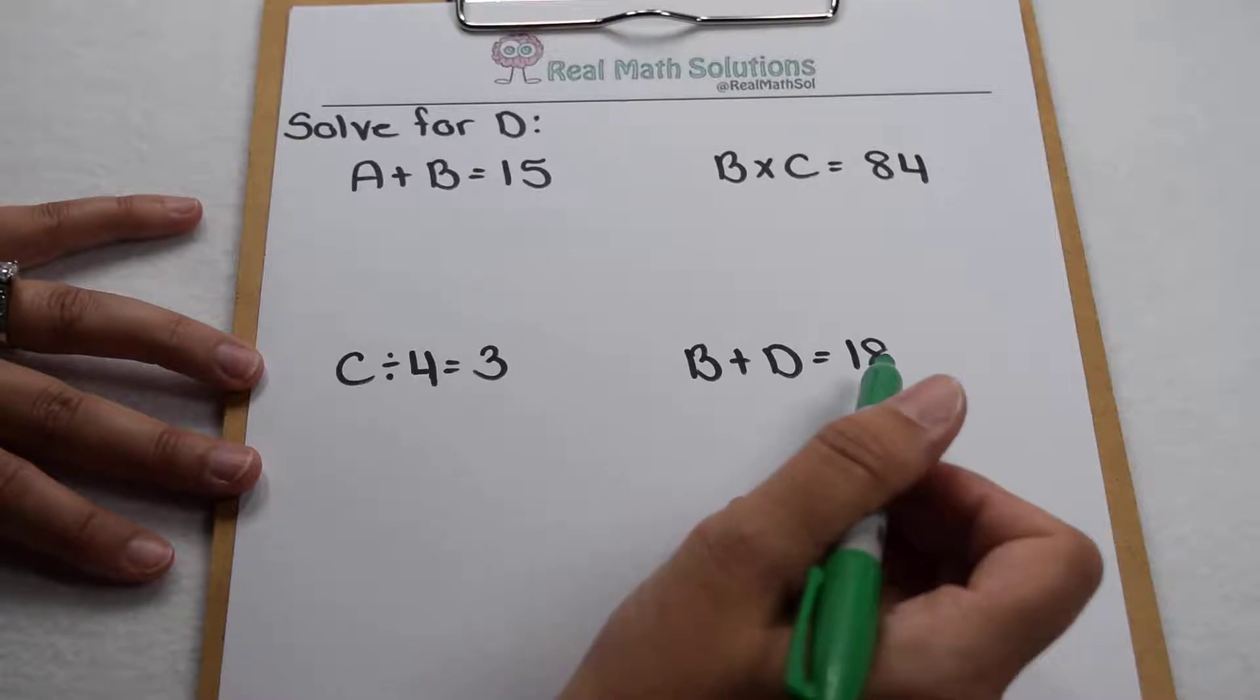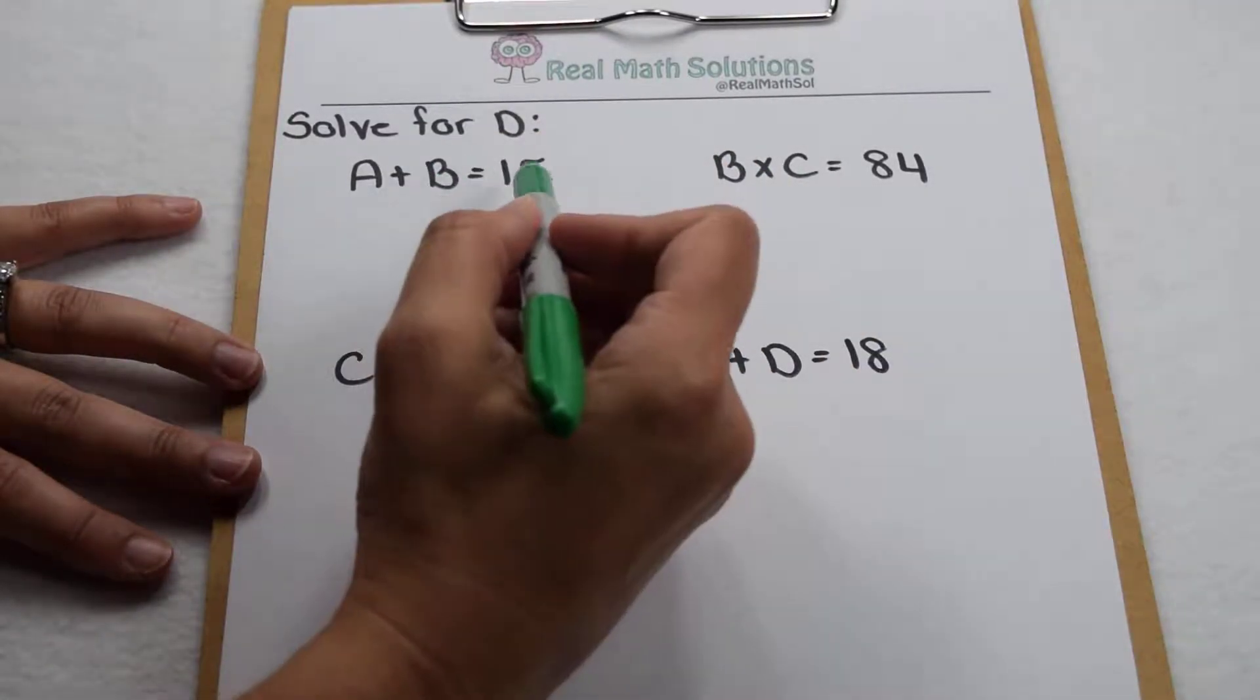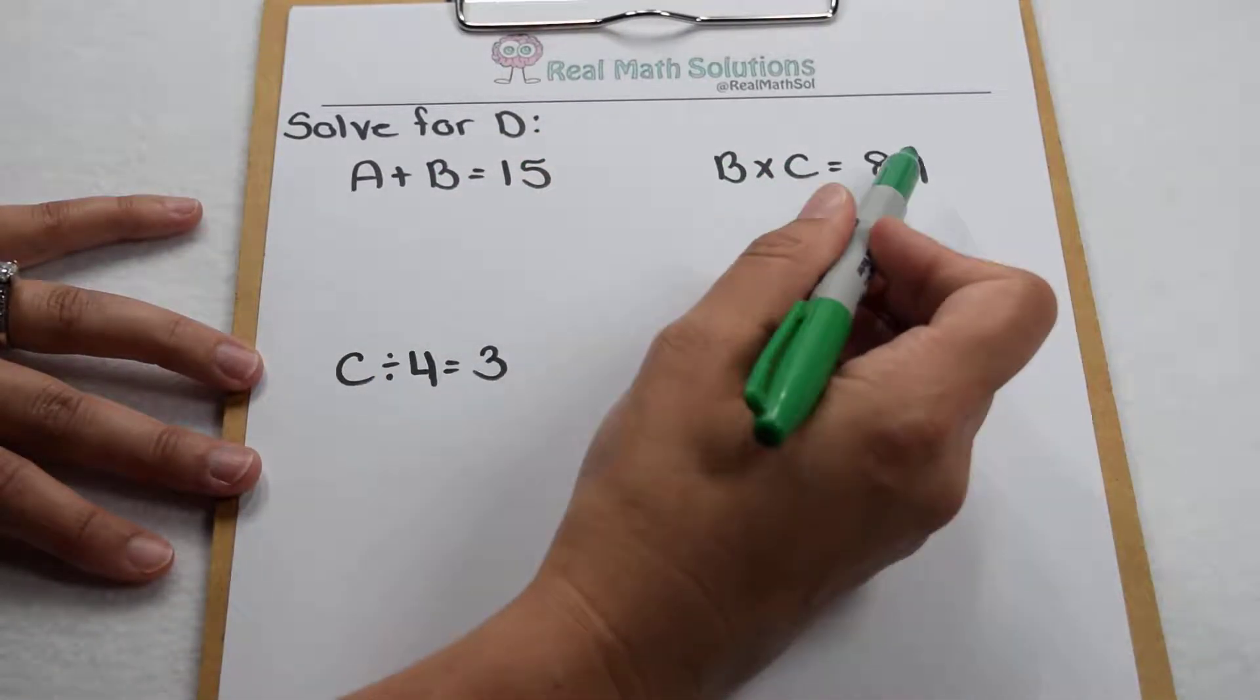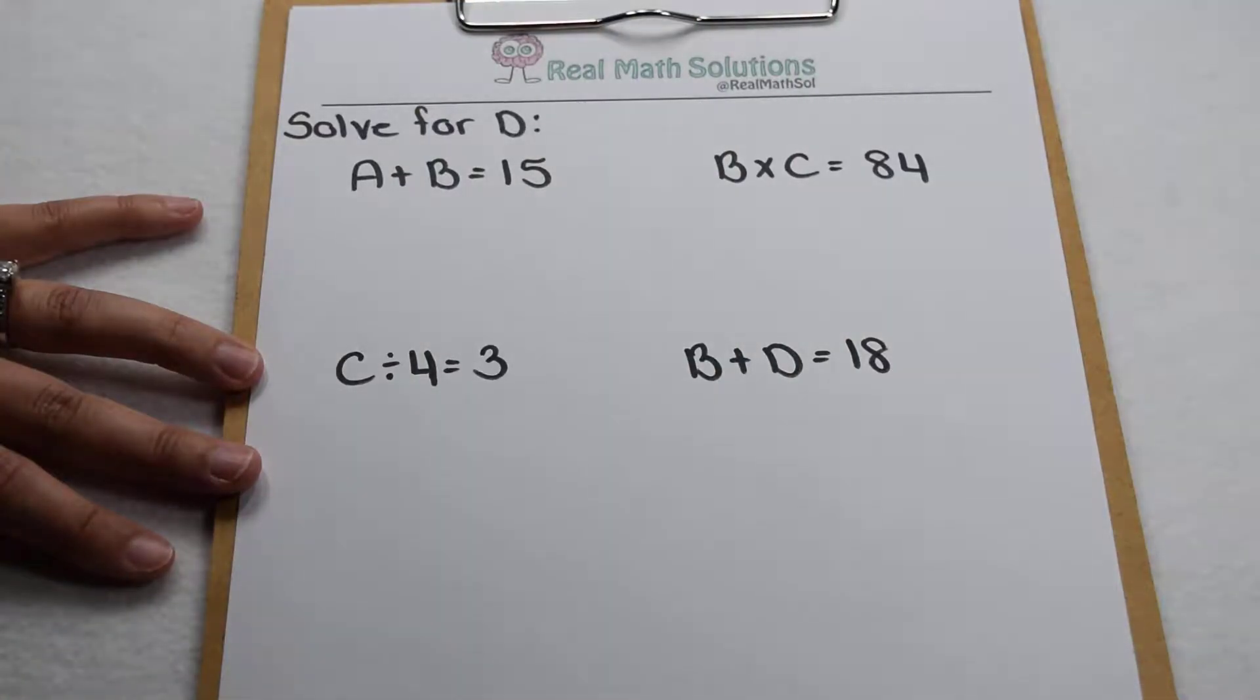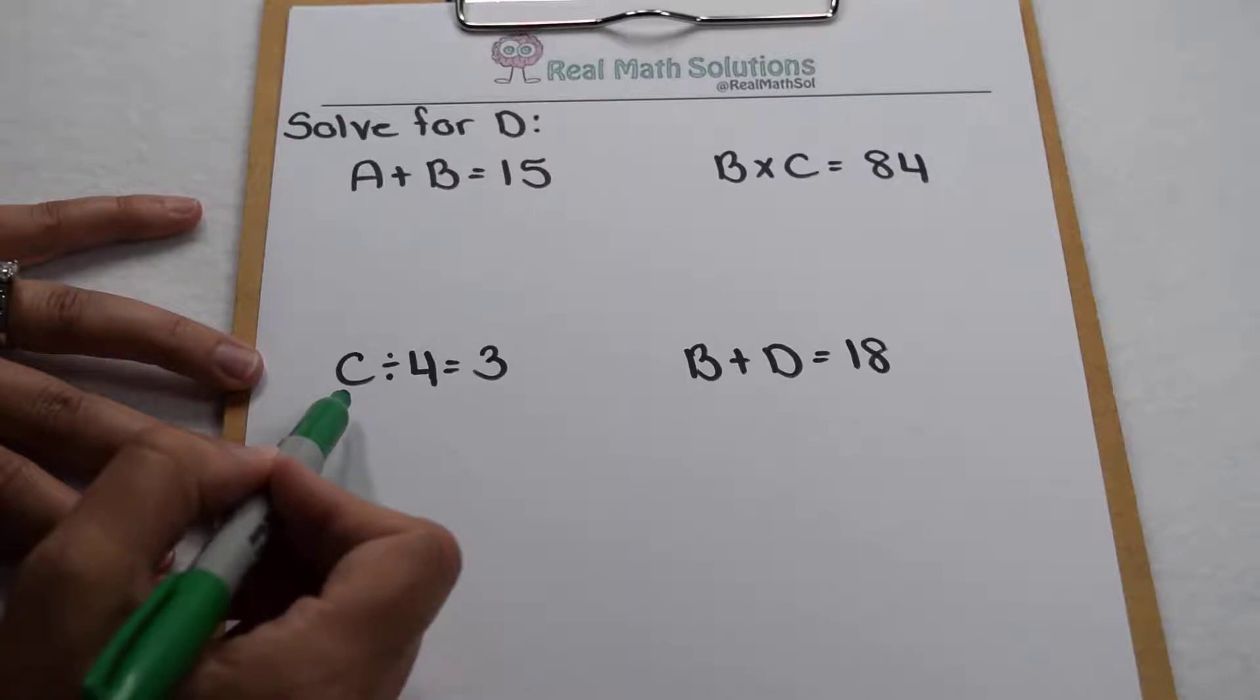And if we look for information about b, we see a plus b equals 15 and b times c equals 84. The only place we can find out an actual value for one of our variables is here with c. So that's where we're going to start.